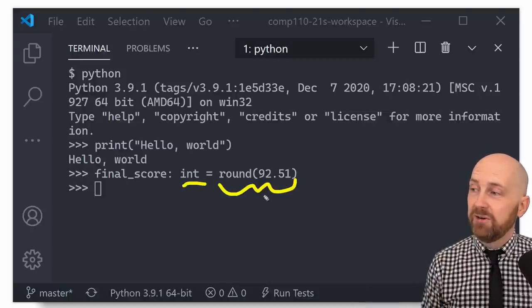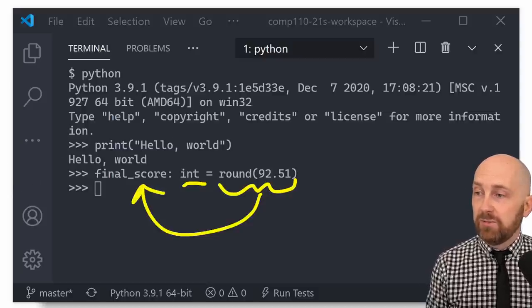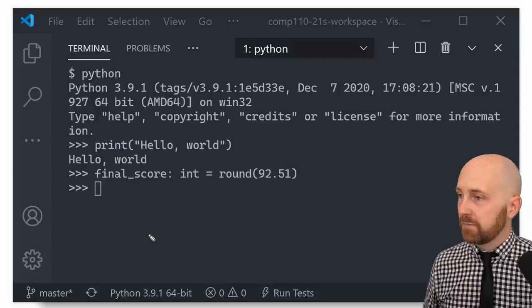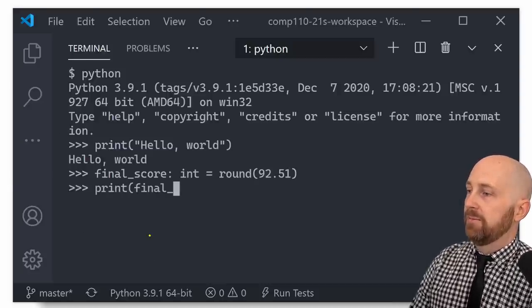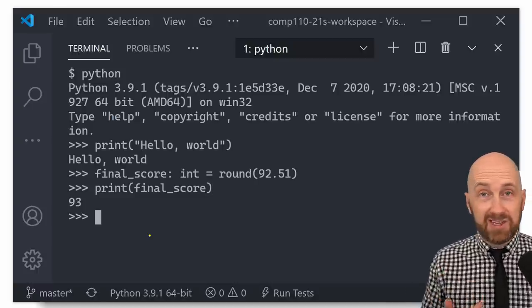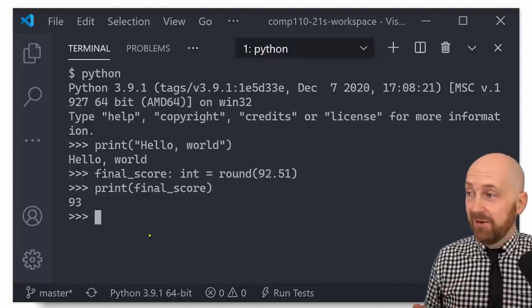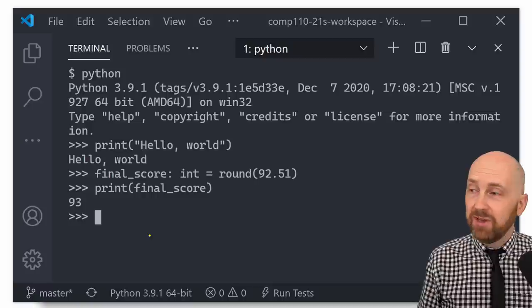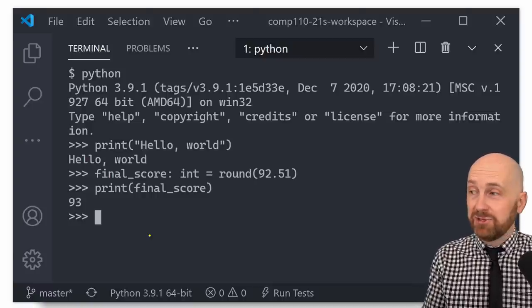So if we were to print, well, what is final score? Let's give that a shot. So print final score. And we see that it's 93. So this was a function that rounded a number for us. We don't know the details, the exact algorithm that round used in order to achieve this. And the good news is we don't have to care. This is an example of process abstraction.